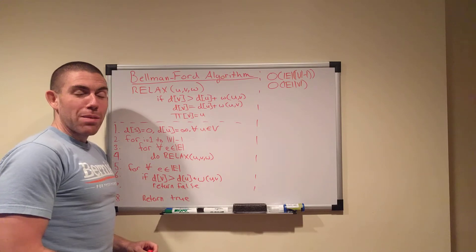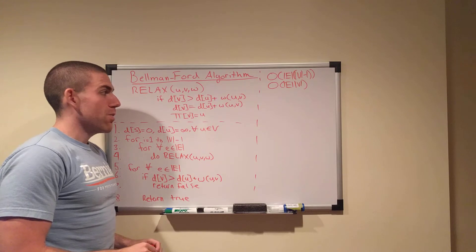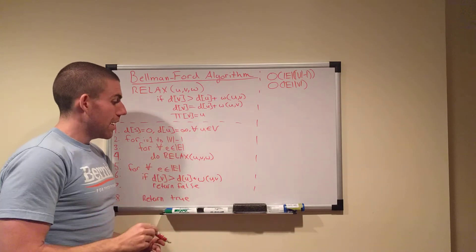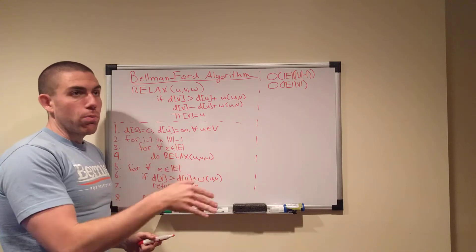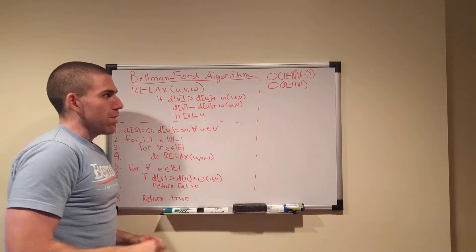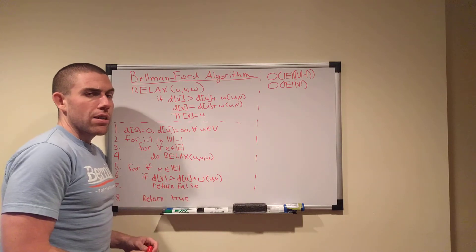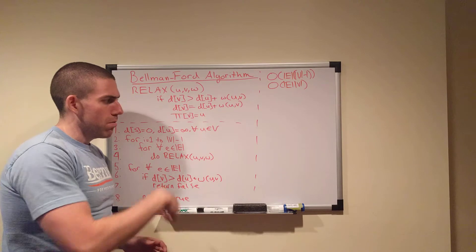Today we're going to be talking about the Bellman-Ford algorithm. We're just going to run through the nuts and bolts of it mechanically, really quickly, get you to understand how it works, why it works, and how it does what it does. And then we'll prove some facts about it, really briefly, and then in the following video we'll do a practical example and work through that together.